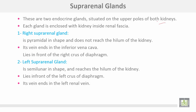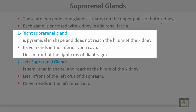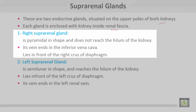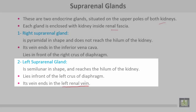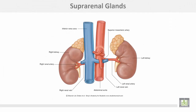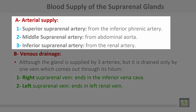The suprarenal glands are two endocrine glands situated on the upper pole of both kidneys. Each gland is enclosed with the kidney inside the renal fascia. The right suprarenal gland is pyramidal in shape and does not reach the hilum of the kidney; its vein ends in the inferior vena cava directly, and it lies in front of the right crus of the diaphragm. The left suprarenal gland is crescent-shaped and reaches the hilum of the kidney; it lies in front of the left crus of the diaphragm, and its vein ends in the left renal vein.